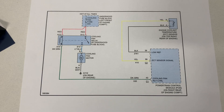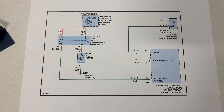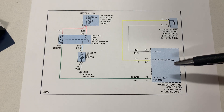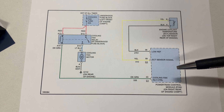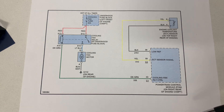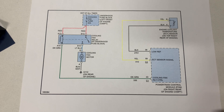Today we're going to look at the difference between input and output circuits and the different kinds. On input circuits we're comparing pull-up versus pull-down, and for the output we're going to be looking at high side versus low side drivers. To help with this I pulled up a wiring diagram from a 2003 Chevy Cavalier — the cooling fan circuit — and we're going to focus on where the computer is involved to talk about inputs and output circuits.